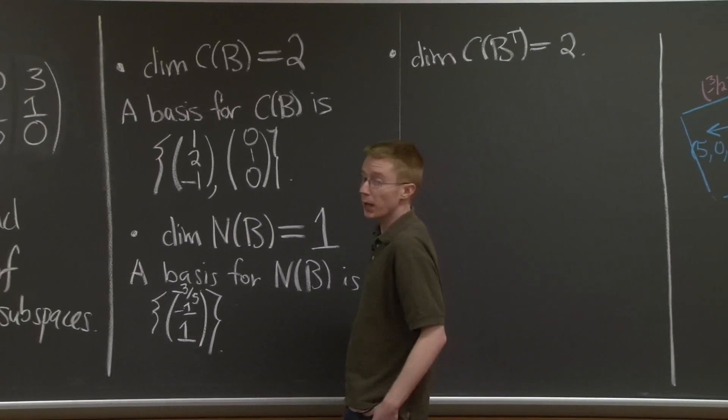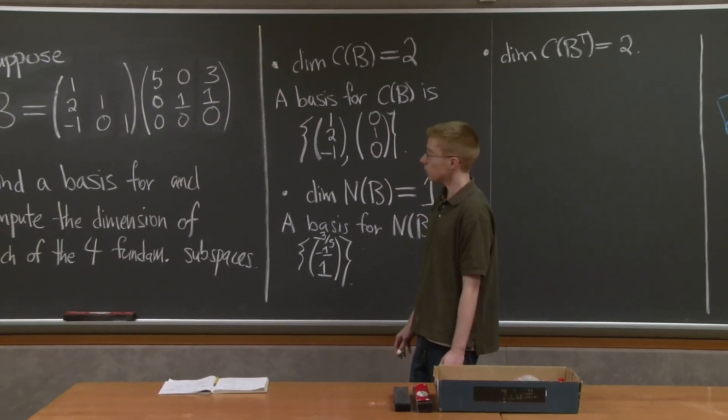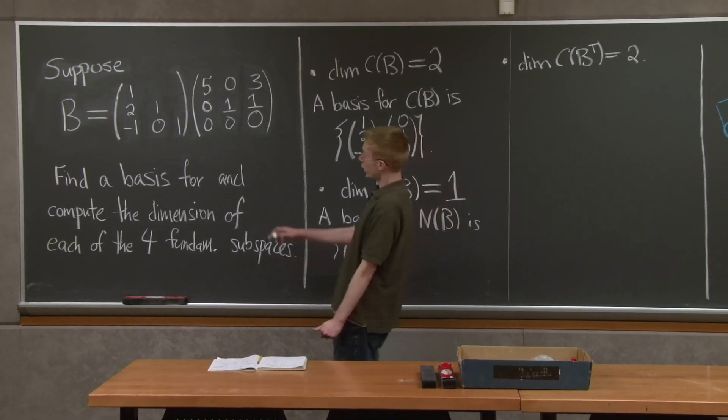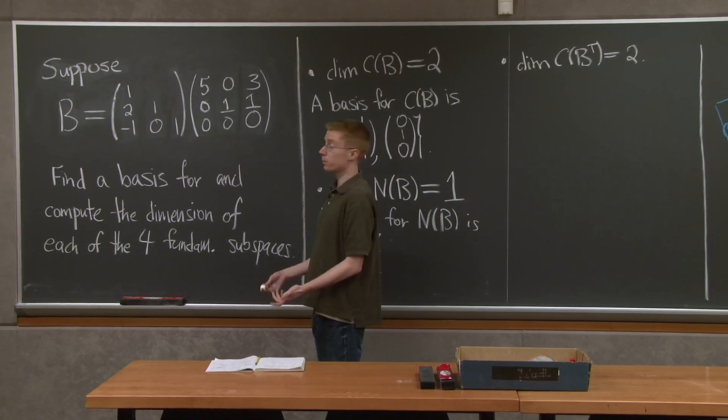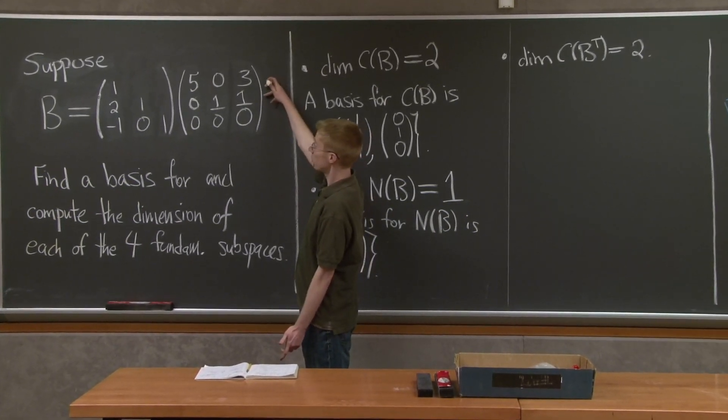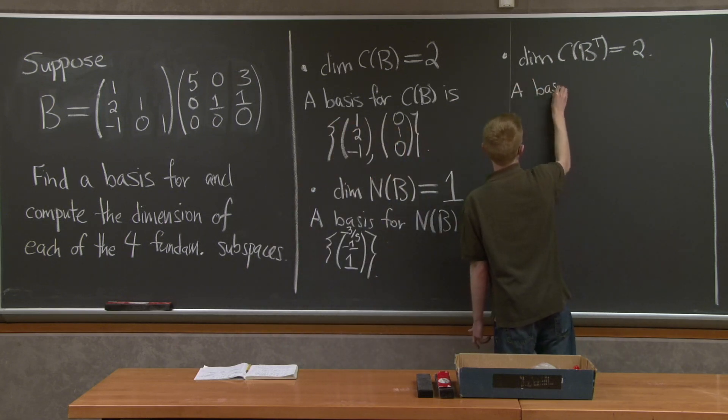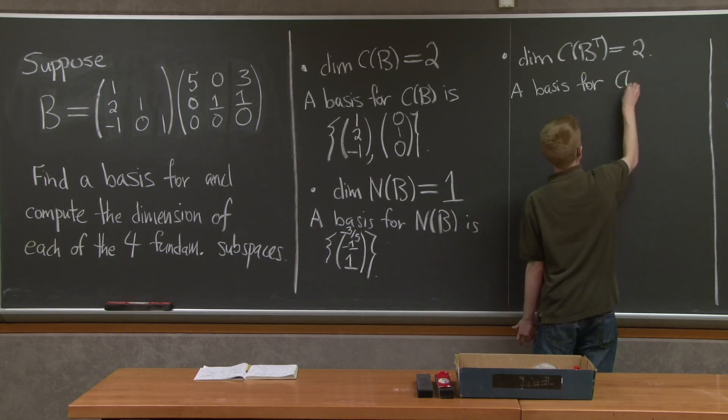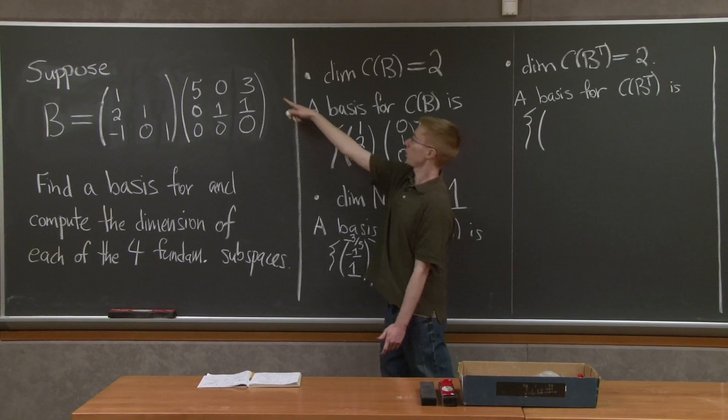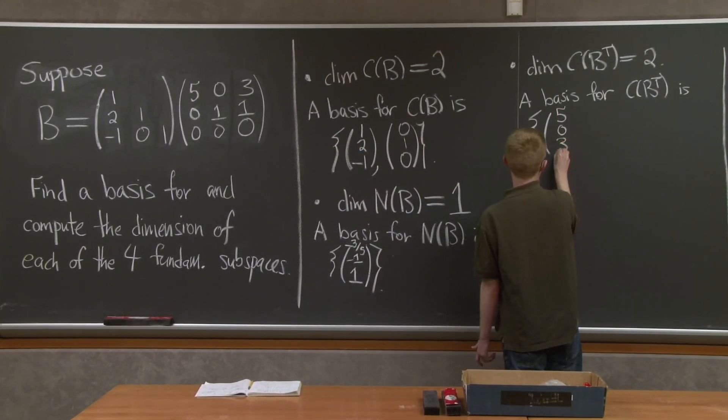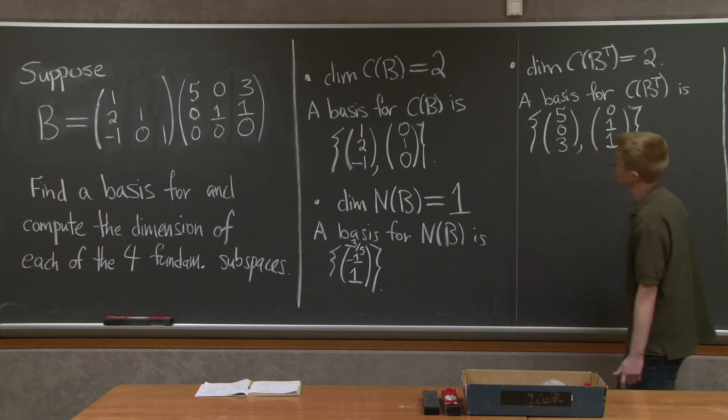And how do we find a basis for the row space? Well, there are a couple of ways of thinking about this. One way is we got this upper triangular matrix from B by doing elimination, and elimination doesn't change the row space. So I can just use the two pivot rows of the matrix U. A basis for my row space here is I just put these two pivot rows together.